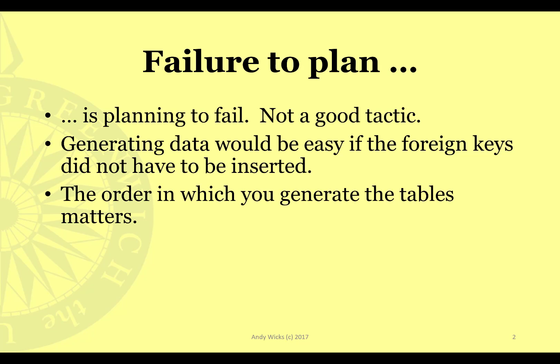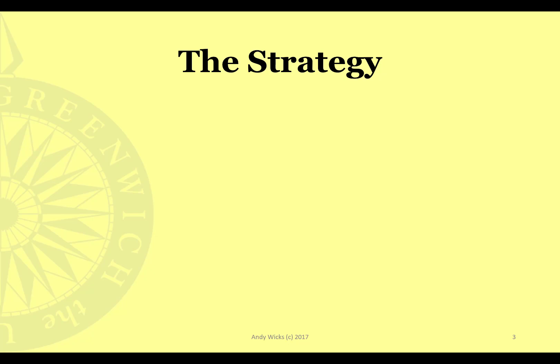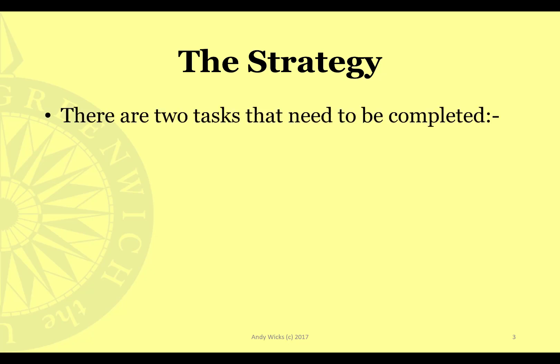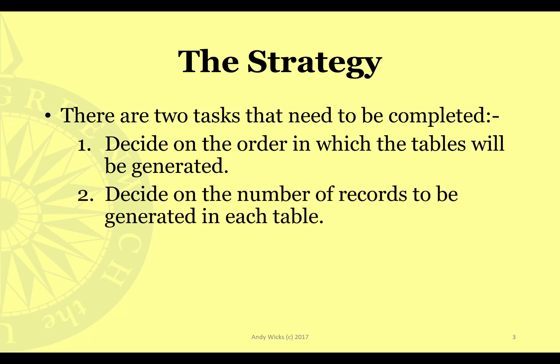The order in which you generate the tables matters. You therefore need to plan the order, and then work out the number of records you want in each table. There are two tasks that you need to complete: the first task is to decide on the order in which the tables will be generated, and the second task is to decide on the number of records to be generated for each table.